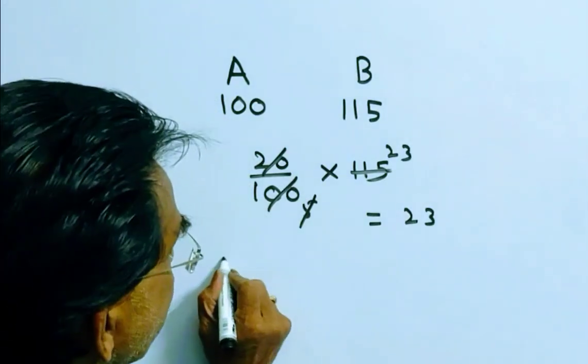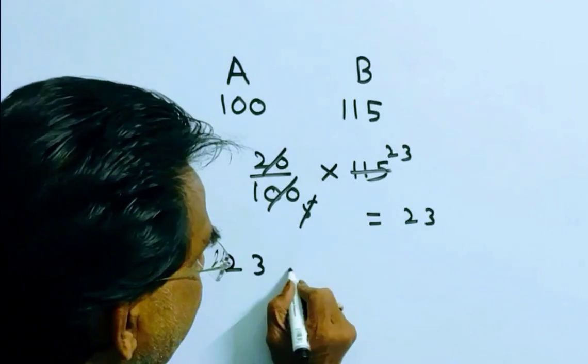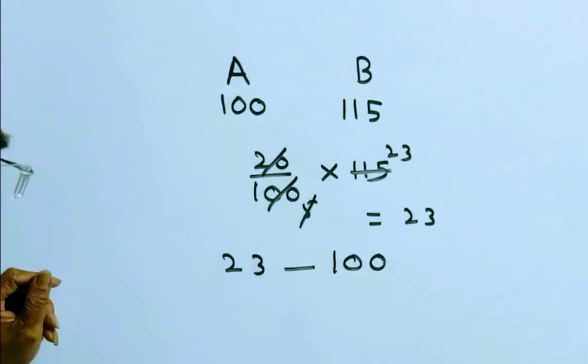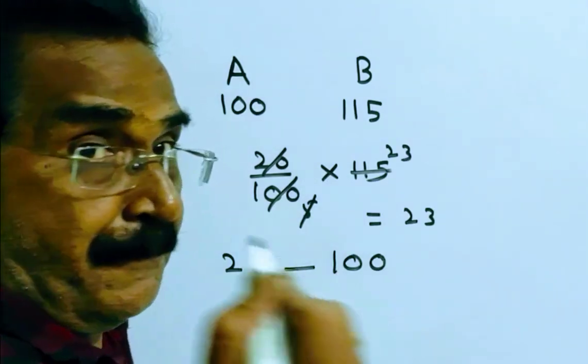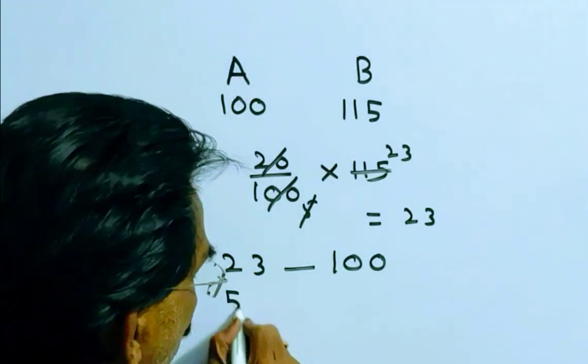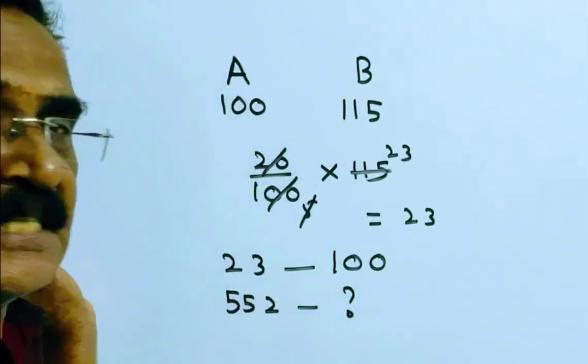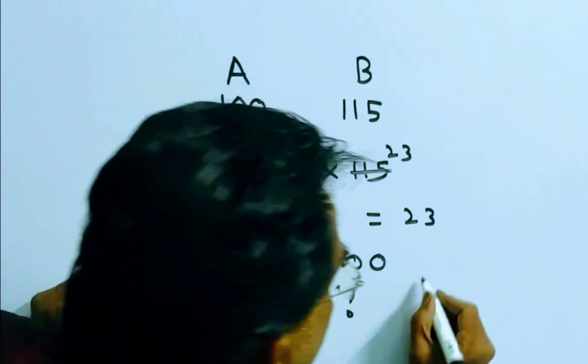100. Friends, if the profit of B is 23, the price paid by A is Rs. 100. But it is given that the profit of B is 552. If the profit of B is 552, what is the price paid by A? Friends,